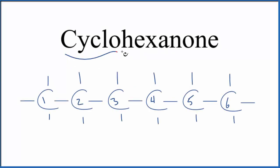Let's write the structure for cyclohexanone. So why don't we start off with just drawing hexane, just a straight-chained alkane. Hex, that means six. We have six carbons.